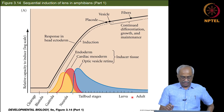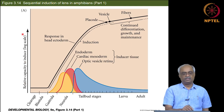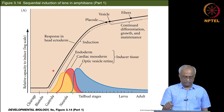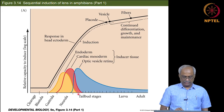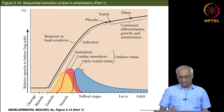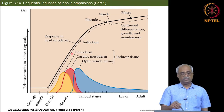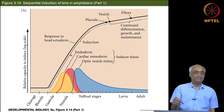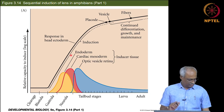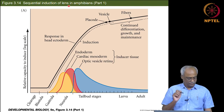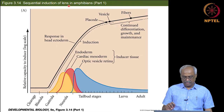This graph shows the relative capacity to induce the lens at different stages. At different stages, different tissues induce sequentially — from gastrula to neurula, the endoderm tissue induces the ectoderm, peaking at mid-neurula, then sequentially next is cardiac mesoderm, then finally the optic vesicle. If these two did not induce sequentially before, the head ectoderm will not be competent to respond to the optic vesicle signal.